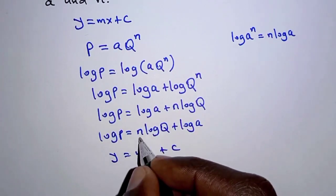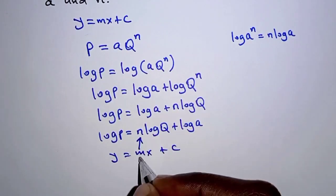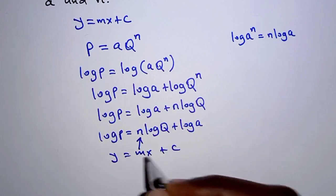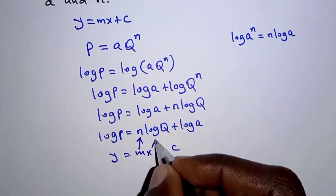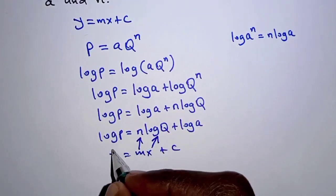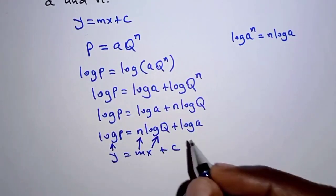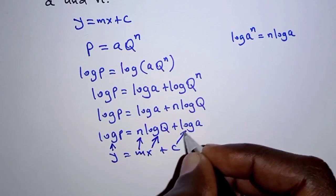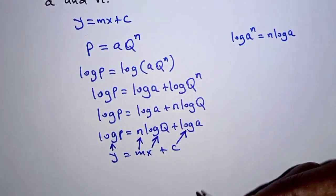You'll note that N here represents M. M is the gradient of the line. X here is what we're plotting on the X axis, log Q, and Y is log P. And then C is the Y intercept which is log A.